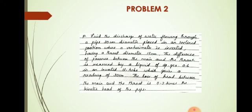Here we have to do the inclined venturi meter. The pipeline is inclined and we have to find the discharge of water. The diameter of the pipe is 30 centimeter, placed in an inclined position with a venturi meter inserted. Throat diameter is 15 centimeter. The difference of pressure between the main and the throat is measured by a liquid of specific gravity 0.6 in an inverted U-tube which gives a reading of 30 centimeter.